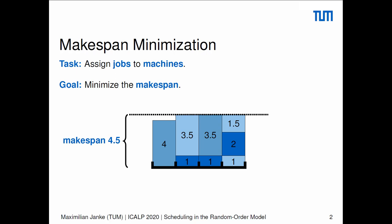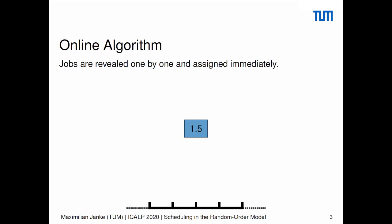In this talk though, we are going to focus on the online version. To an online algorithm, jobs are revealed one by one, and each one has to be assigned permanently and irrevocably before the next one is revealed. Hence, online algorithms make choices without knowing the future. They only know the processing times of jobs they have assigned so far, and the current job which they are about to assign. This already impedes online algorithms from performing optimally on arbitrary input sequences.